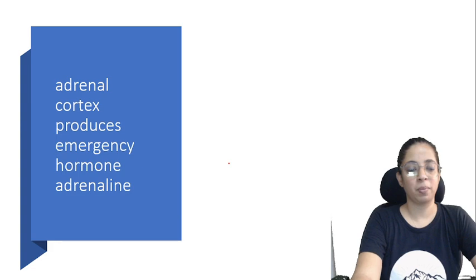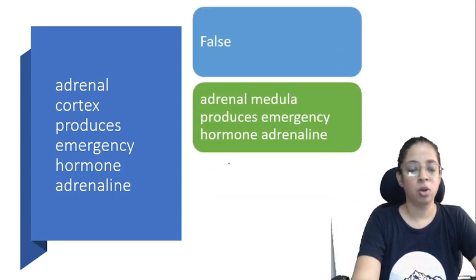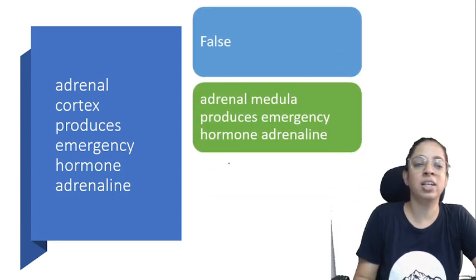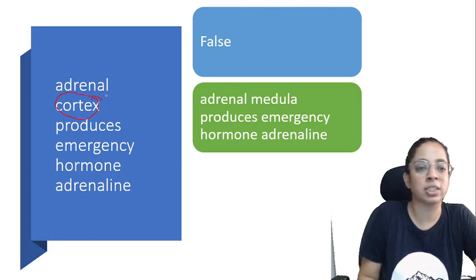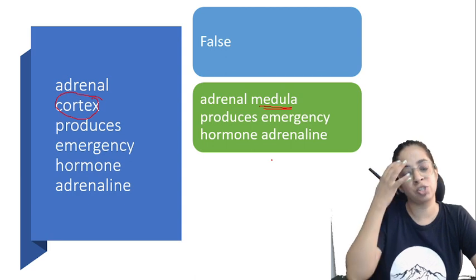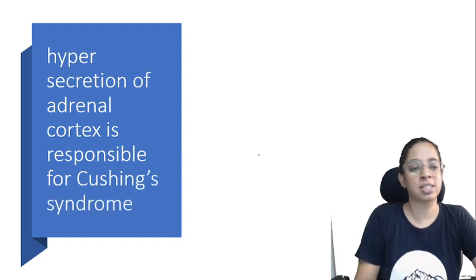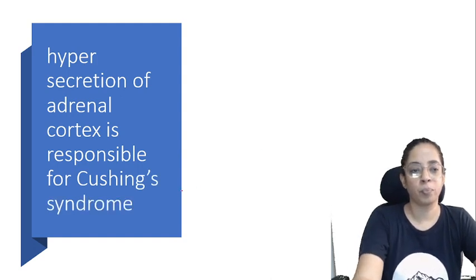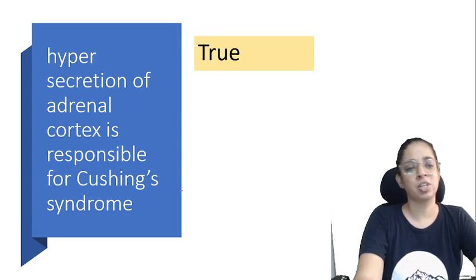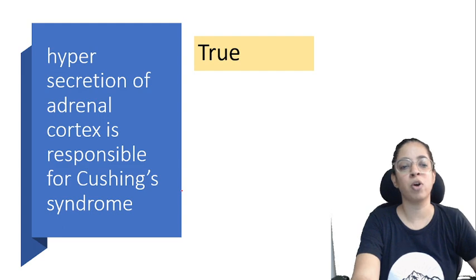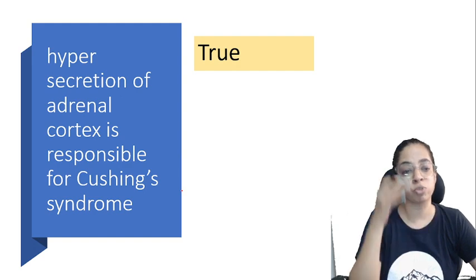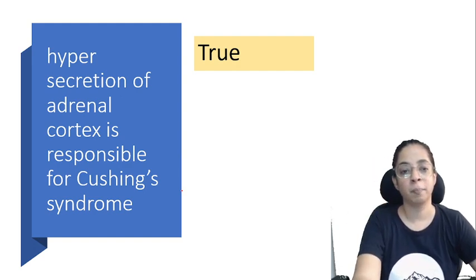Calcium is the main element of thyroxine — false; iodine is the main element of thyroxine. Adrenal cortex produces the emergency hormone adrenaline — false; it is the adrenal medulla, not the adrenal cortex, that produces the emergency hormone adrenaline. Hypersecretion of adrenal cortex is responsible for Cushing's syndrome — that is true. Go ahead and watch my videos where I've explained Cushing's syndrome in detail, including how it is caused and its symptoms.